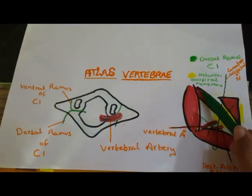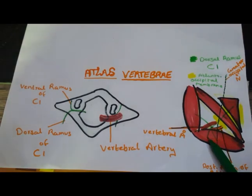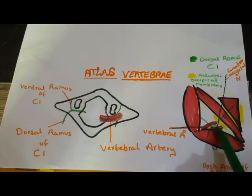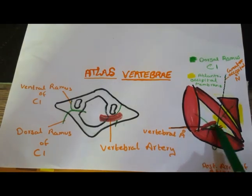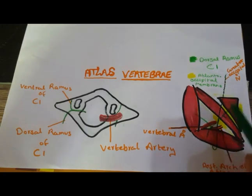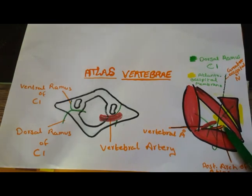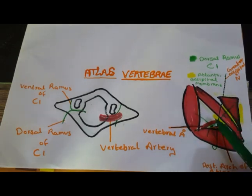Following are the contents of the suboccipital triangle. I have drawn the suboccipital triangle showing the muscles: rectus capitis posterior major, rectus capitis posterior minor, oblique capitis superior, and oblique capitis inferior. The orange line indicates the posterior arch of the atlas vertebrae, the red line shows the vertebral artery, and the green line shows the dorsal ramus of C1, which innervates the muscles of the suboccipital triangle. The suboccipital plexus of veins is also present.